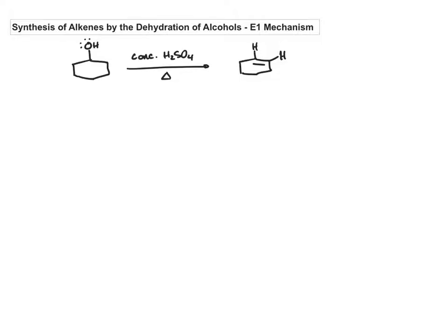This is going to be a unimolecular elimination. If we look at our starting material, we have a secondary alcohol. We're treating with a strong acid, concentrated sulfuric acid. And the Greek delta means heat. So a secondary alcohol treated with concentrated sulfuric acid and heat gives us an alkene.